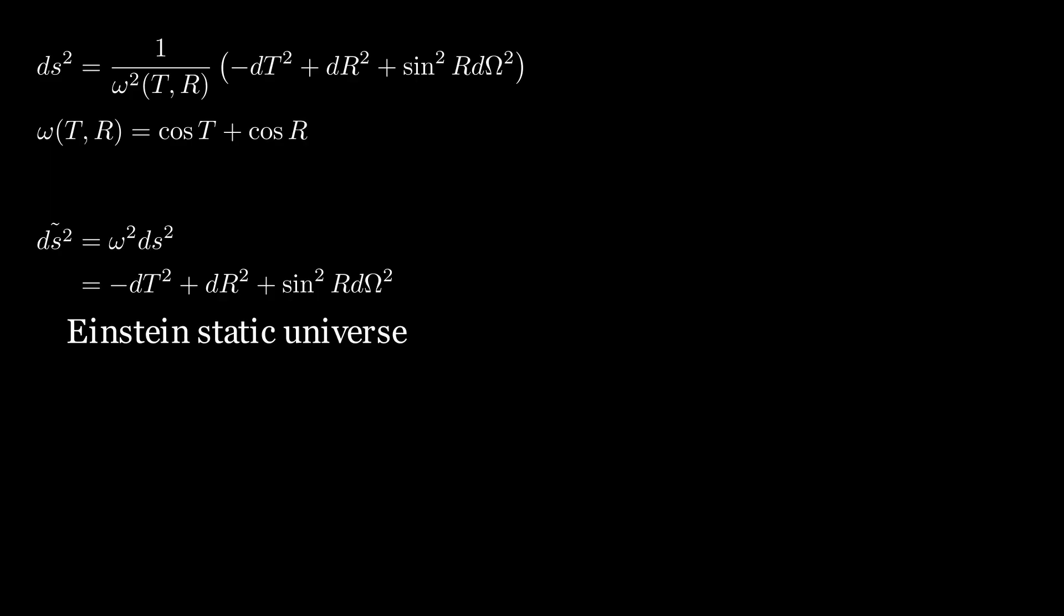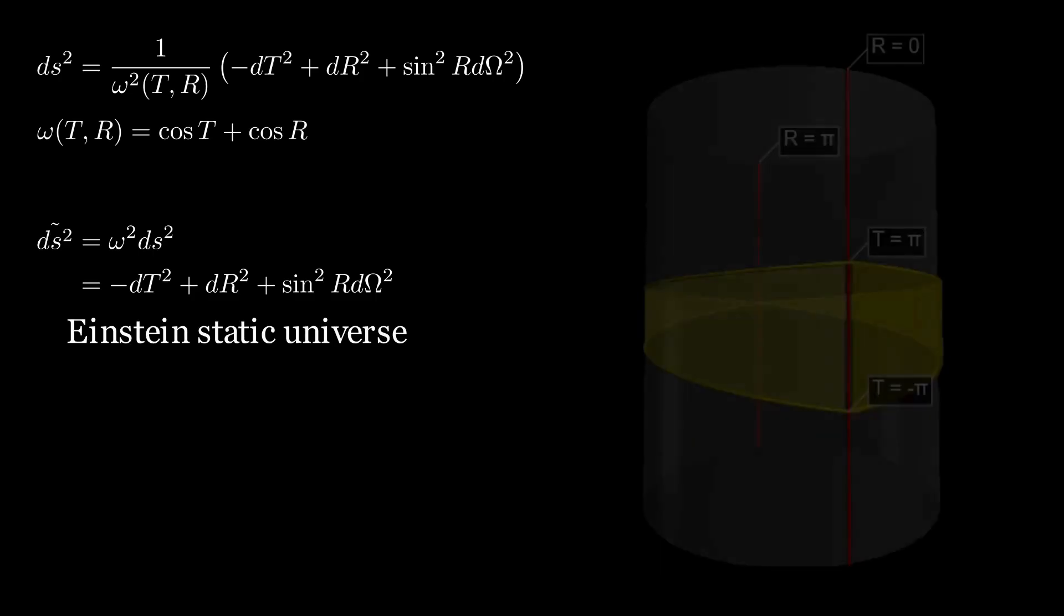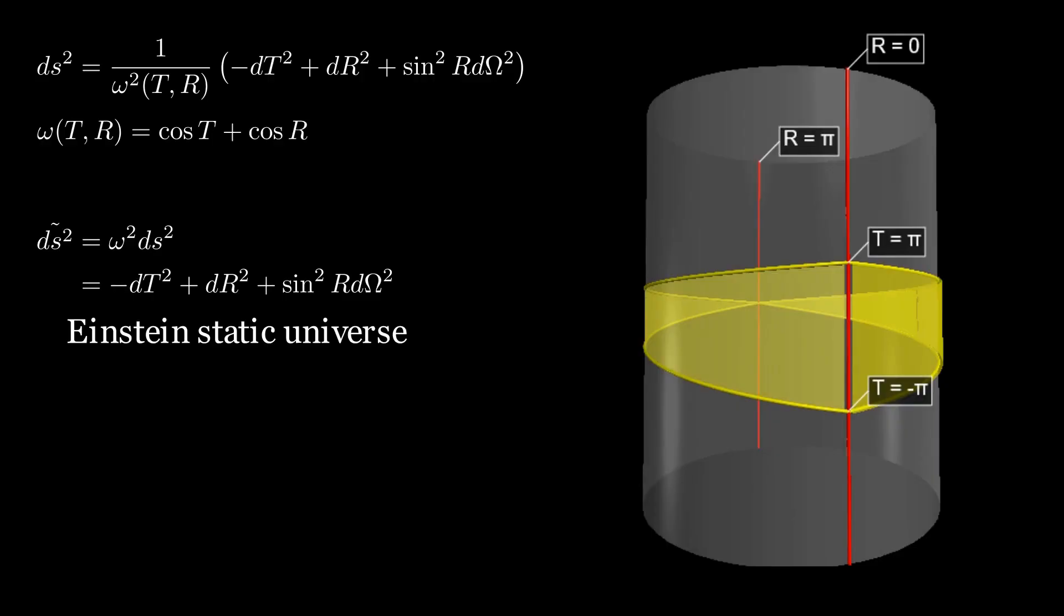We will talk more about different types of universes when we go to cosmology, but remember that our coordinates were compacted so that our metric is a subset of the full Einstein static universe. We can represent it as the interior of the shaded region, which is a part of the full Einstein static solution.